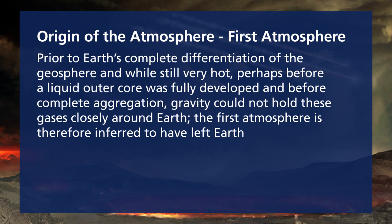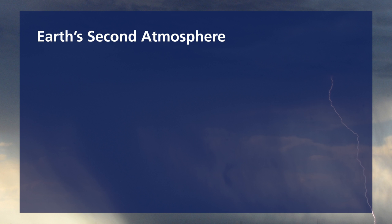Before differentiation into the core, mantle, and crust, the Earth was very hot and the liquid outer core was fully developed from the complete aggregation, so these gases could not condense yet to form what would later become our oceans — it was still quite hot at this time. The secondary atmosphere was composed of volatiles.